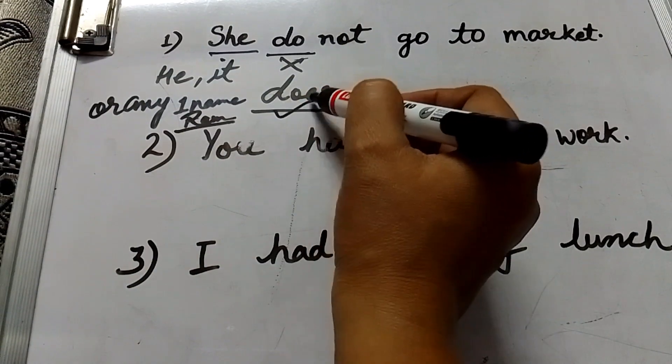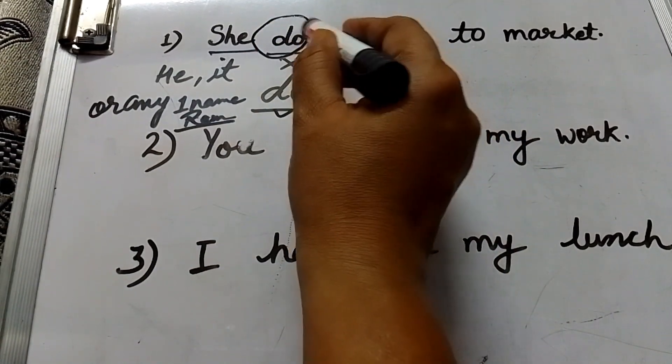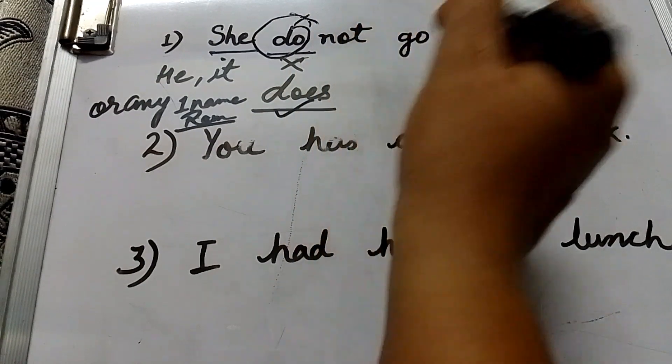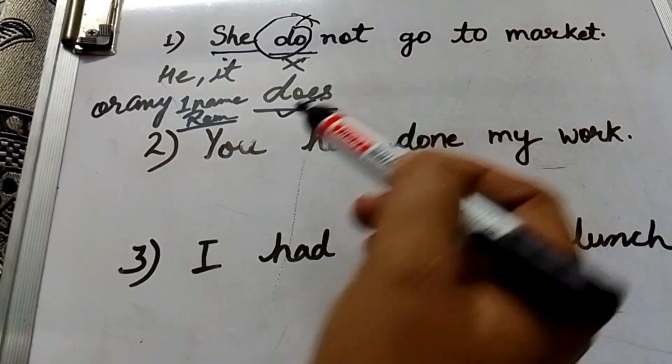So with these we will use does not do. Okay, this was the mistake in this sentence. Now, next second sentence.